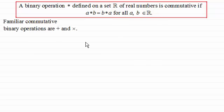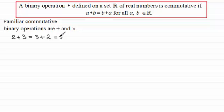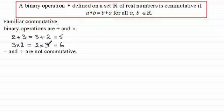You should already be familiar with some common binary operations which are commutative — those are addition and multiplication. For example, two plus three equals five, and three plus two also equals five, so addition is commutative. Similarly, three times two equals six and two times three equals six, so multiplication is commutative. Whereas subtraction and division are not commutative: two minus three gives minus one, which is different from three minus two which is one. And three divided by two is one and a half, whereas two divided by three is two-thirds.